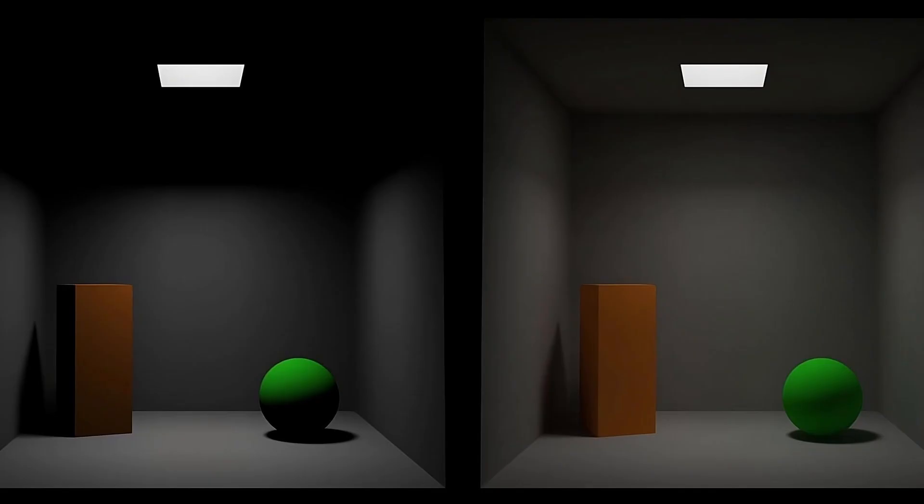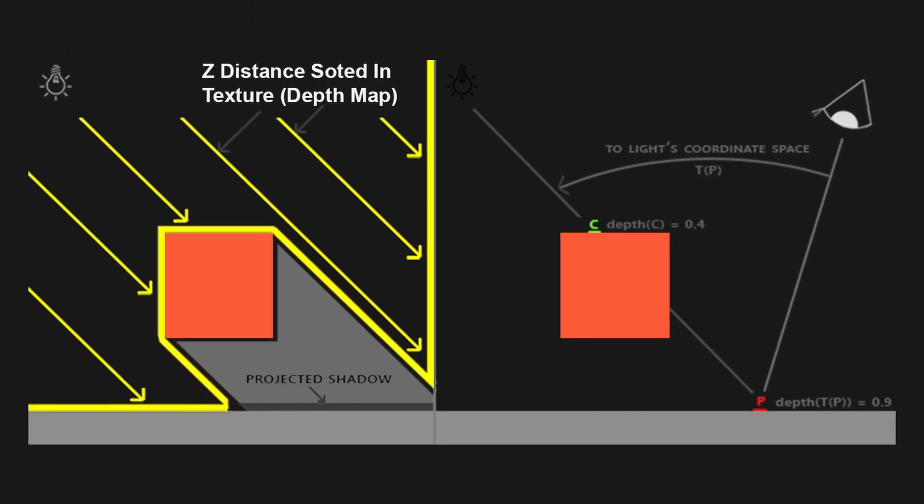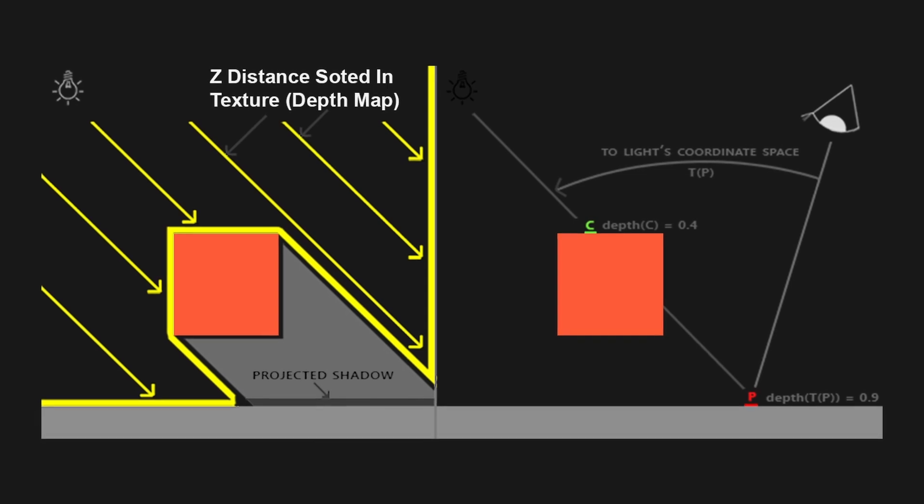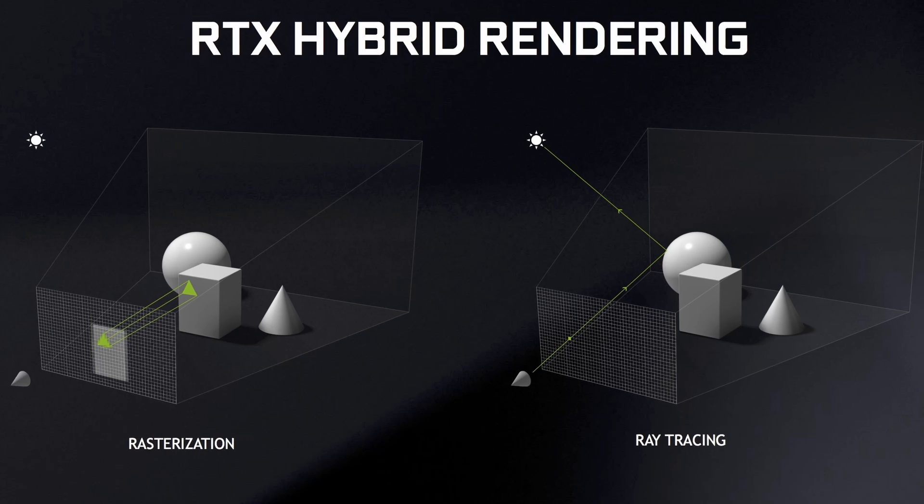Which of these settings tanks performance the most? Shadows and global illumination have been and still are among the biggest bottlenecks in video game performance. Shadows are not scalable with how we do them today — we render the scene twice and need to store huge atlases. Global illumination is also problematic because to achieve it we need to fake ray tracing in some way, which is why it never scales well in a real-time solution.